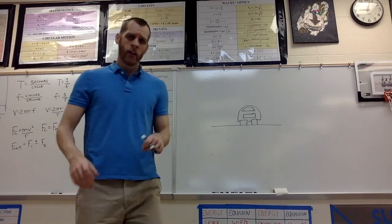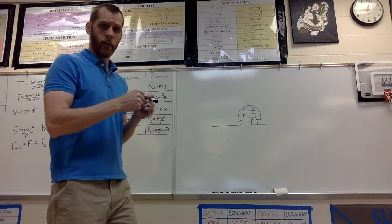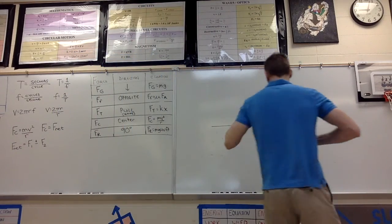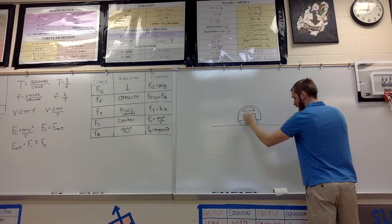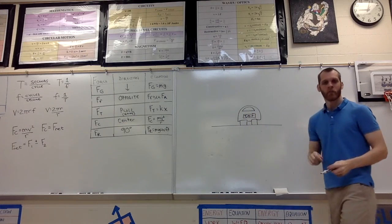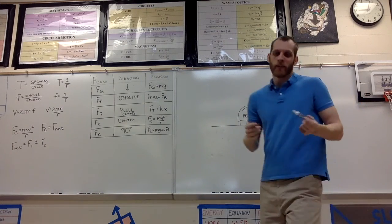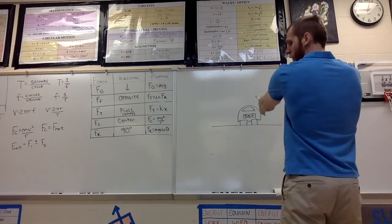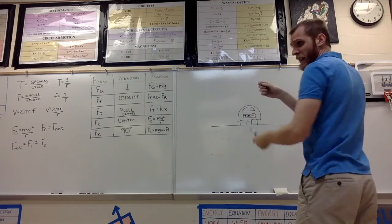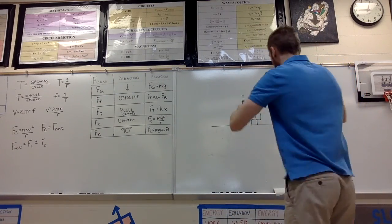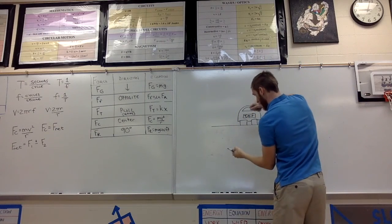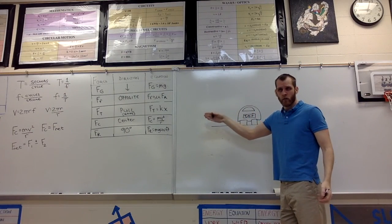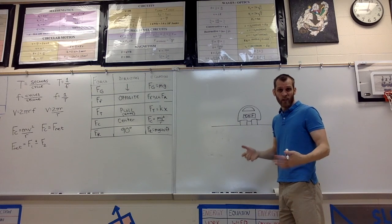Here's another example. Let's say you're driving around in a car — this is the back view of the car. We're driving along and we want to make a left turn. We need to think about what forces allow the car to turn left.